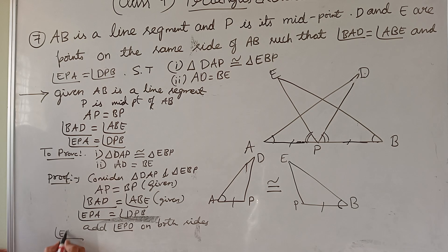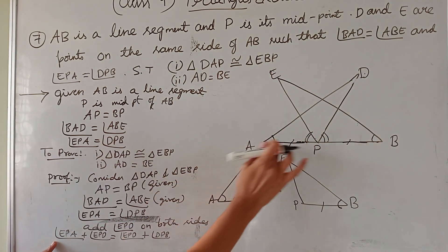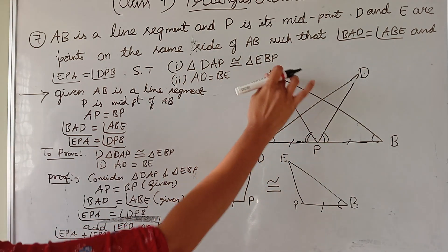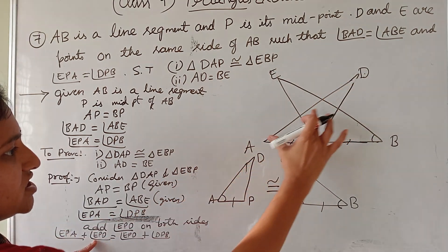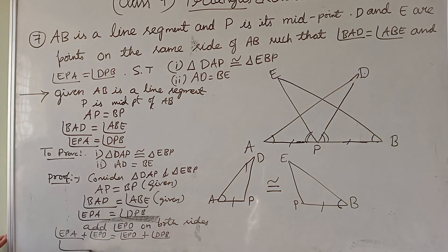Now, angle EPA plus angle EPD equal to EPD plus DPB. Here, EPA plus EPD is equal to APD. I can write APD.